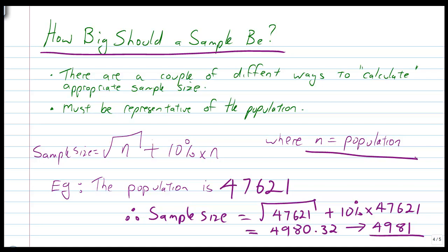Okay, so you get your population, your total population, find the square root of it, then find 10% of that population and add it together, and that gives you an approximate kind of outline of how big your sample should be. So, I've got an example down the bottom here. If your population is 47,621, our sample size is going to be the square root of 47,621. Add 10% of that, which gives you 4,980.32, and if you're sampling people, okay, you're going to round it up to the next one, which is 4,981. That's how big our sample would be. So, once again, that still is an approximate sample, because there may be characteristics within that population that you haven't taken into account.